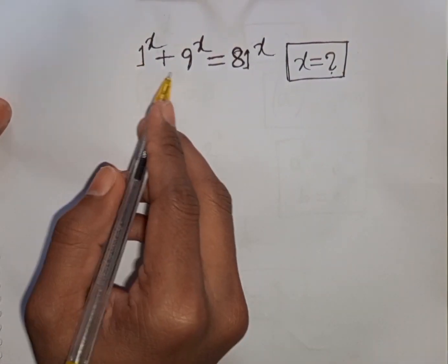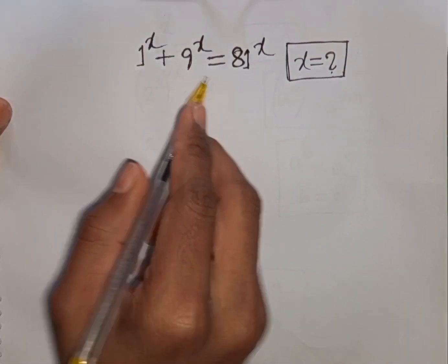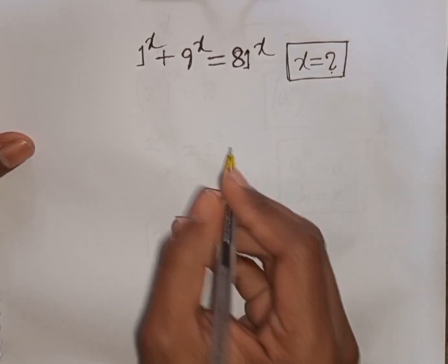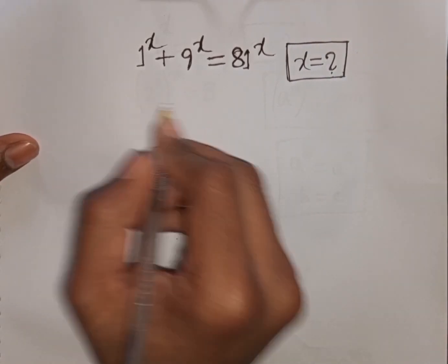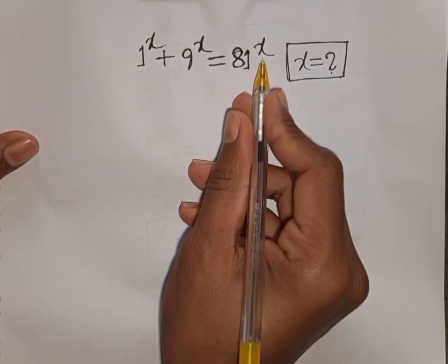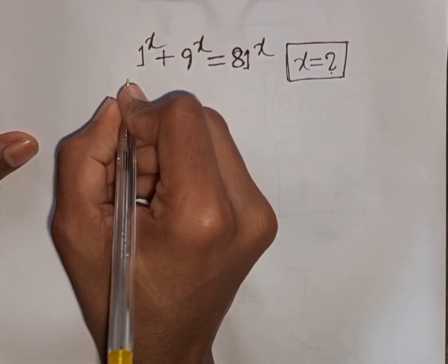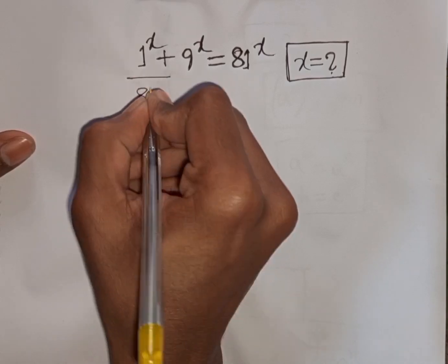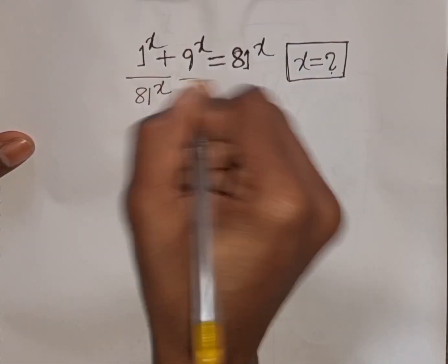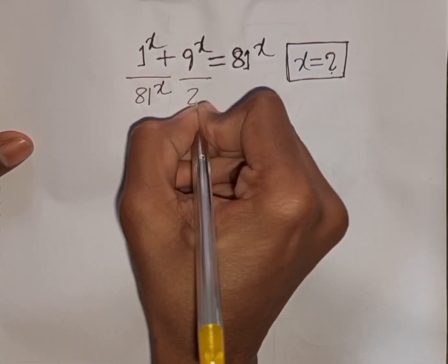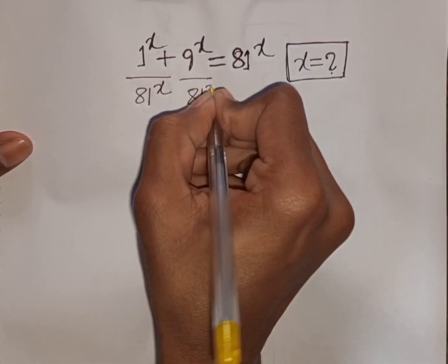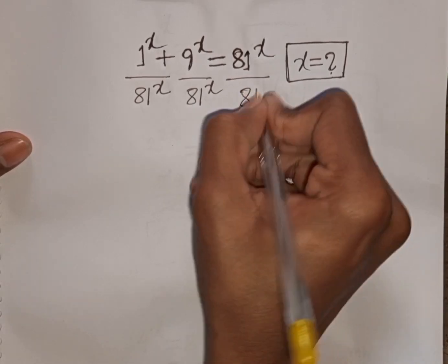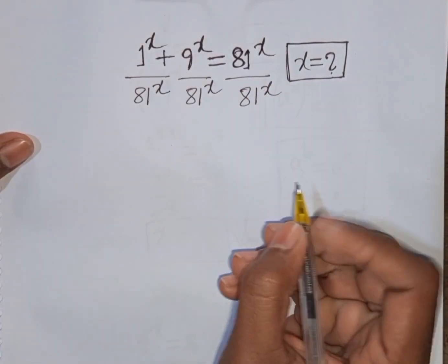1 power x plus 9 power x is equal to 81 power x. Find the value of x. So first we divide both sides by 81 power x.